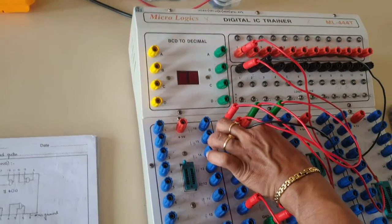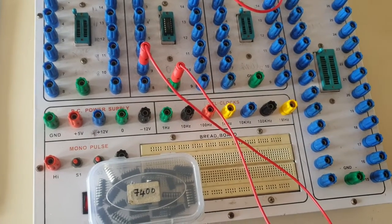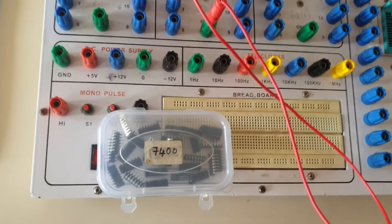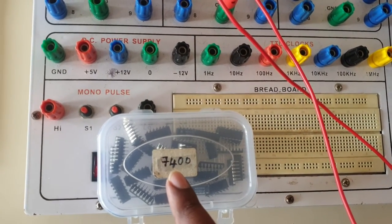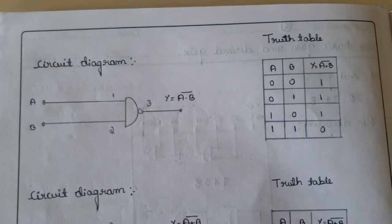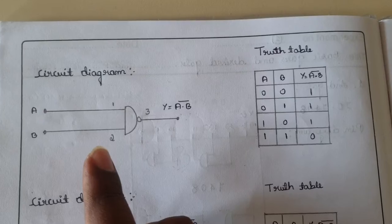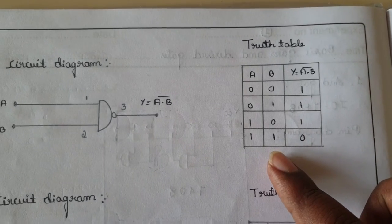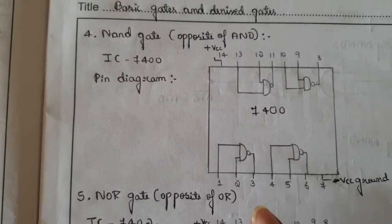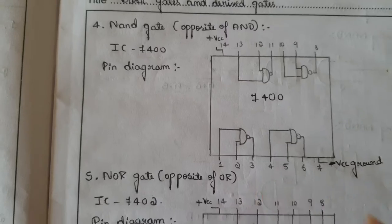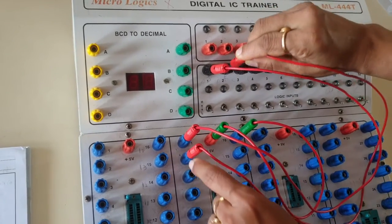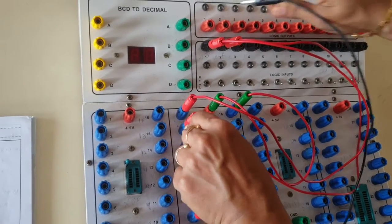Next we shall take up the NAND gate. The IC number associated with the NAND gate is 7400. Looking at the circuit diagram, for the NAND gate pins 1 and 2 act as inputs and the third pin acts as output. The truth table says that when both inputs are high, the output will be low. So the first pin is connected to input 1, the second pin to input 2, and the third pin to the output.